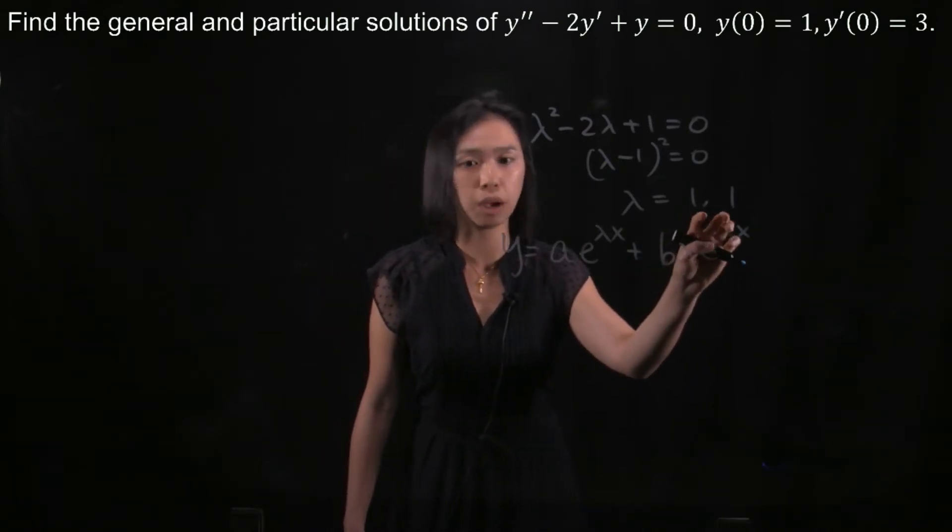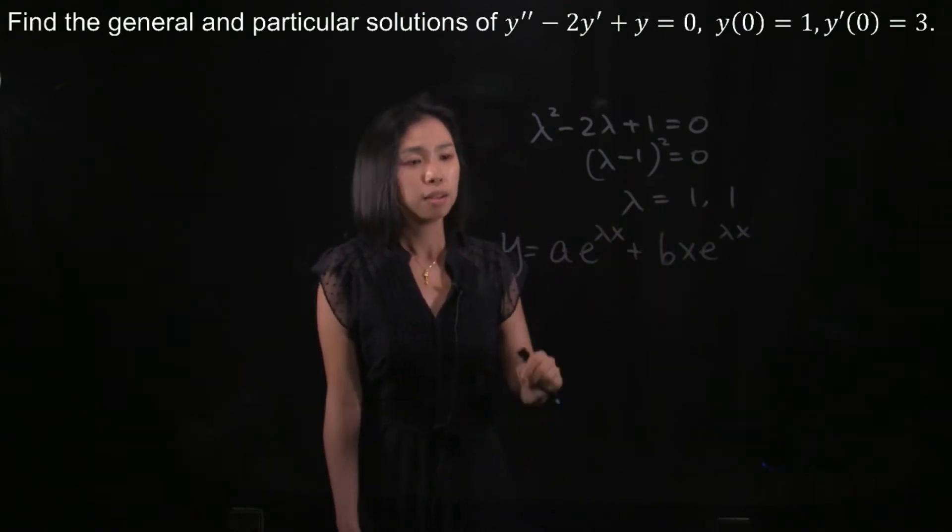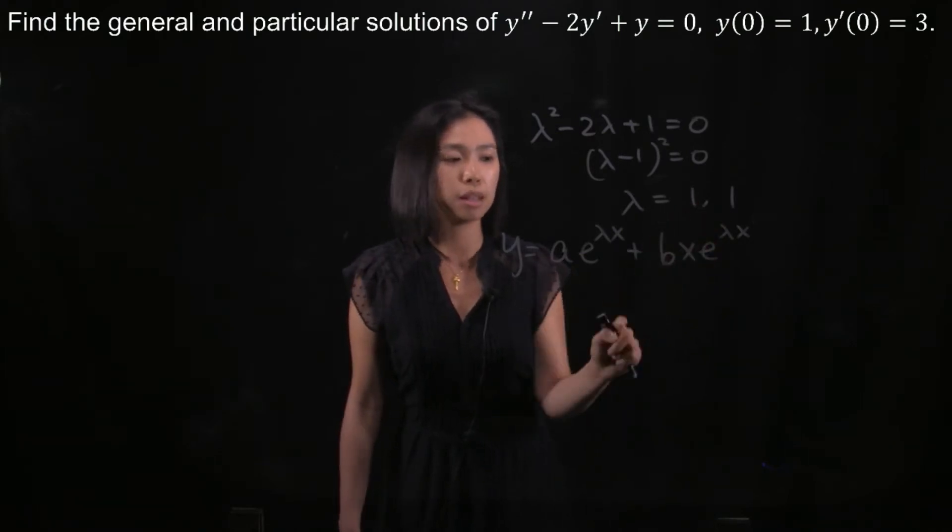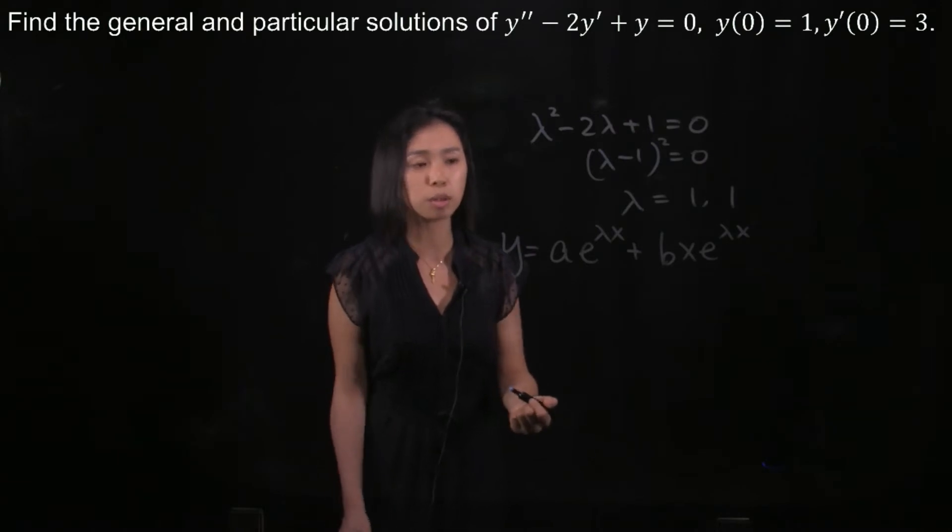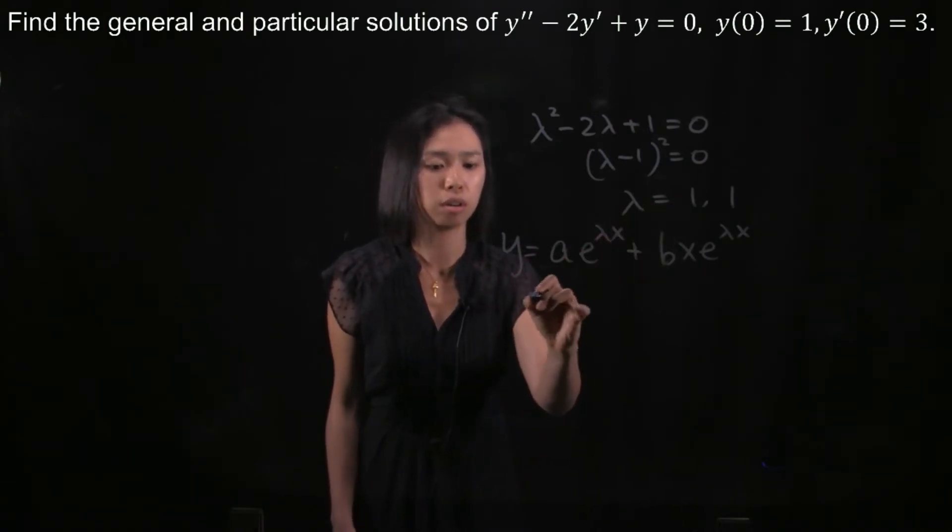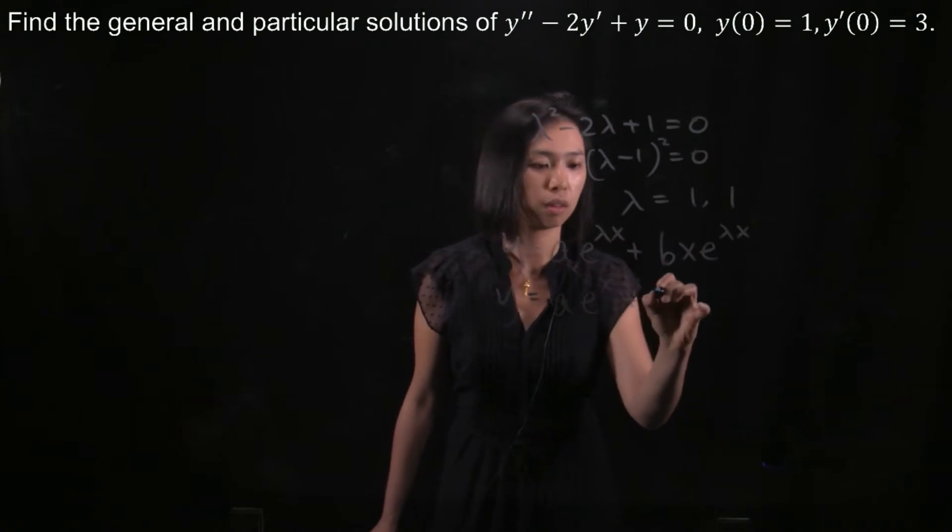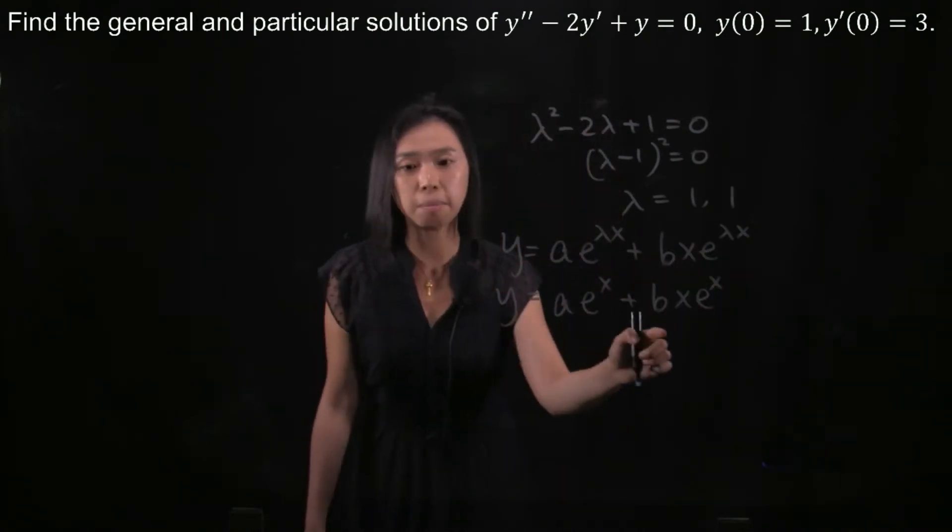The reason is because we have two roots here, so one term for one root. And since they are the same, these two roots are the same, that's why we have an extra x here. And then we can now substitute lambda here. a and b are constants.